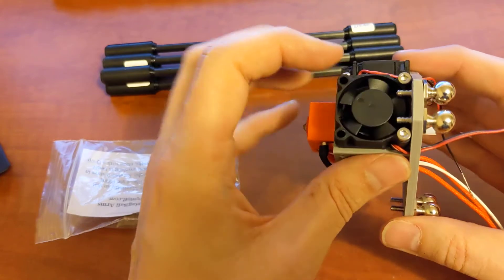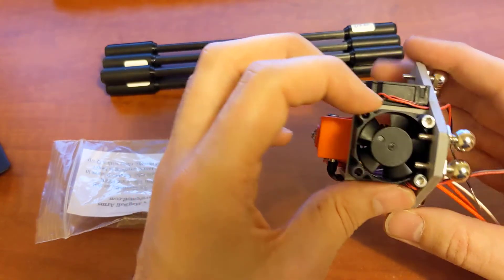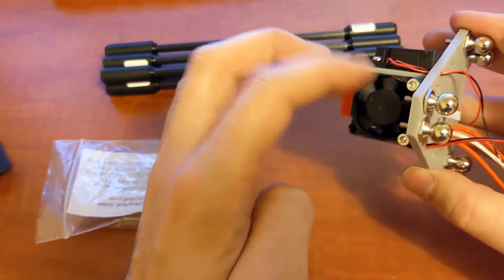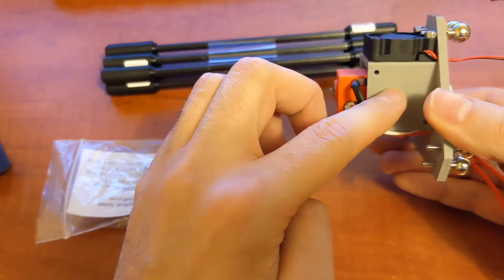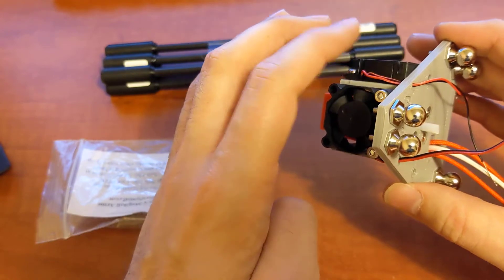The fans here are 3010, so a 3010 fan for the nozzle cooling or for the hot end cooling, and then there's a part cooling fan which is 3010. There's provisions to put two on here. I'm just going to run one for trials.